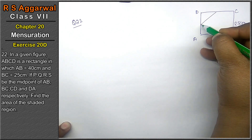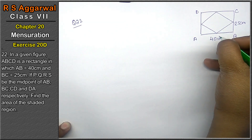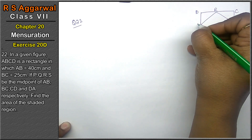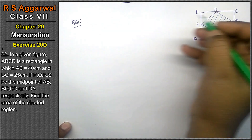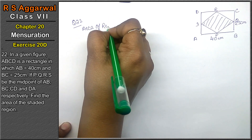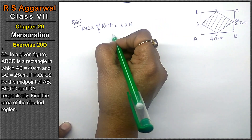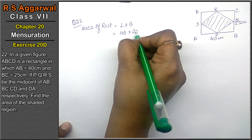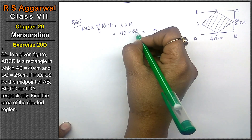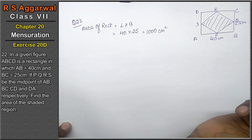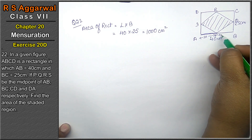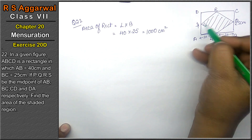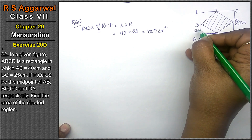The midpoints are joined to form the shaded figure. First, we calculate the area of the rectangle: length into breadth equals 40 into 25, which is 1000 centimeters square. Since these are midpoints, each half-side is 20 cm and 12.5 cm respectively.